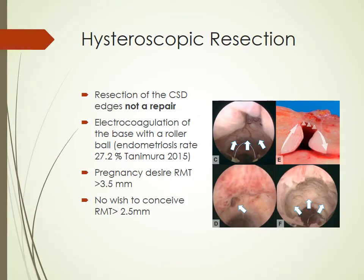Starting with hysteroscopic resection — remember, it is just the resection of the edges of the caesarean scar defect. It is not a repair. Most importantly, you have to do electrocoagulation of the base with a rollerball. The reason for this is that the base is associated with endometriosis in 27.2% of cases, according to Dunimari in 2015. Donets also reported a rate of around 21%. So coagulation of the base is essential. If not coagulating, you can try to resect the base as well.